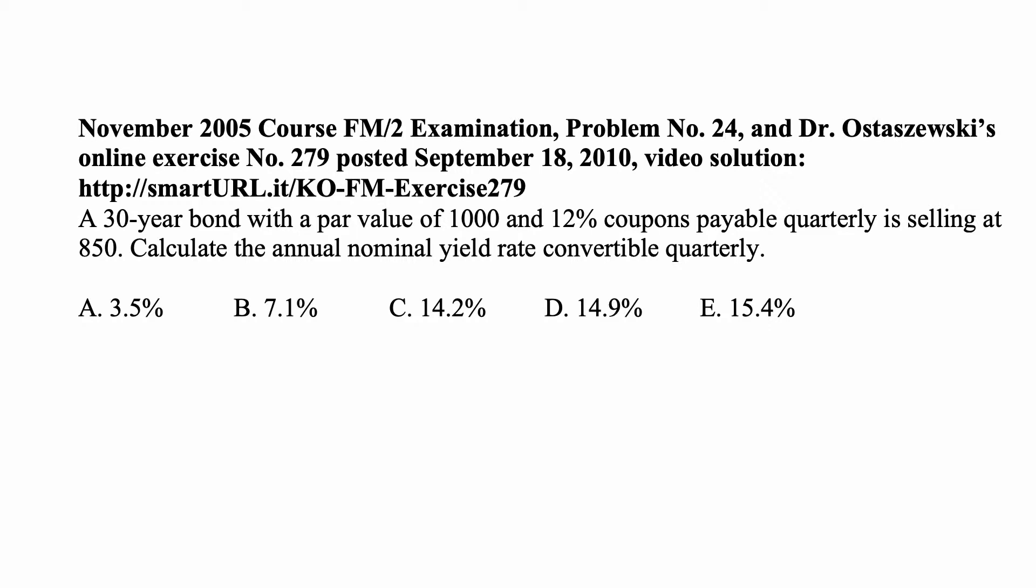Note that the coupons are actually paid quarterly, which means these are coupons of 3% per quarter. And the par value is $1,000, so the coupons are 3% of $1,000, so they're $30.